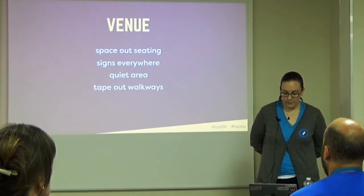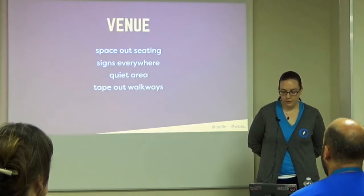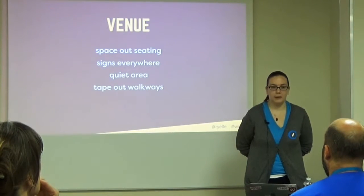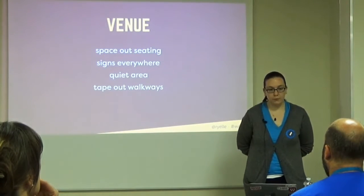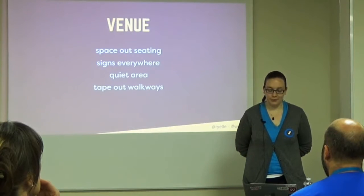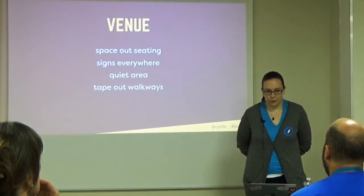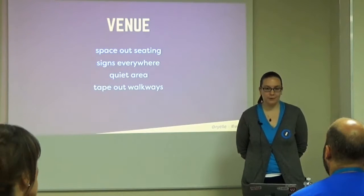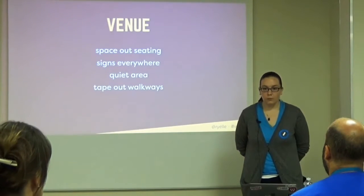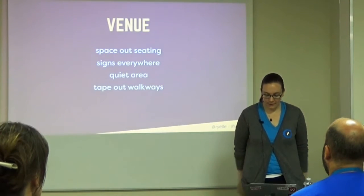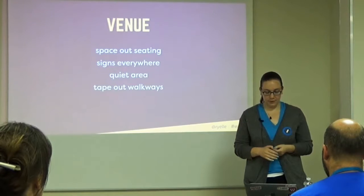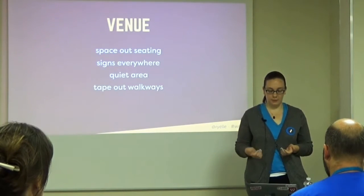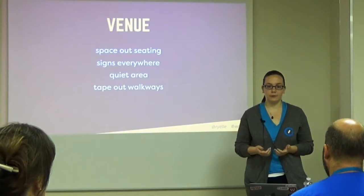When setting up your space, make sure you have enough space between seat rows for people to get up without distracting everyone. Also have some open spaces for people who bring their own chairs or wheelchairs, and space these around the room so they have a choice of where to sit. Put up signs everywhere — you want to enable people to orient themselves, and you don't want to have to direct people to that far auditorium all day.